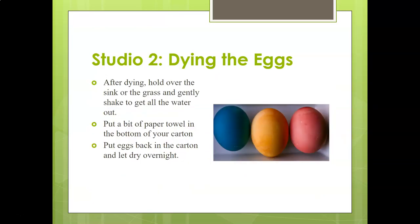After you dye the eggs, hold the egg over the sink or outside over grass and shake it to get all the water out, or let it drip out overnight. Put a bit of paper towel down so it can absorb the liquid and let them dry — not just the outside, but the insides of blown eggs will still have some water that needs to come out.